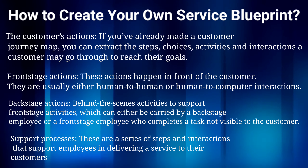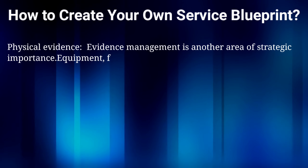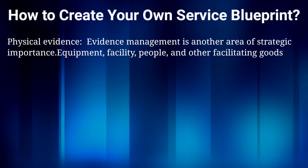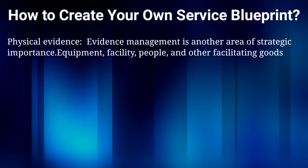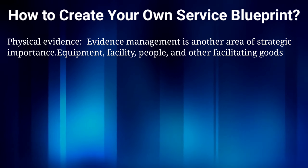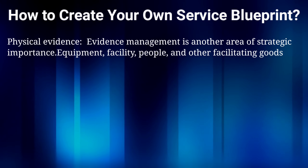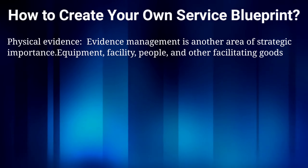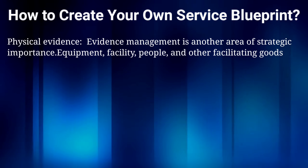At the very top of the blueprint, you see physical evidence. Physical evidence assumes importance because when the customer enters the service system, the service product itself is intangible, so there is a need to tangibilize the intangibles. A potential customer forms an impression about the service on the basis of physical evidence such as equipment, facility, facilitating goods, and people. Service customers use physical evidence during the pre-purchase stage when alternatives are compared. Physical evidence includes service facilities, decor, atmosphere, layout, employee uniforms, and similar elements.